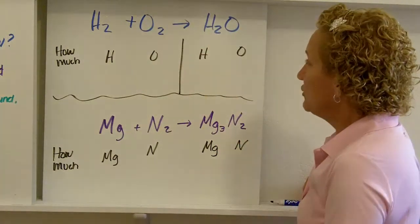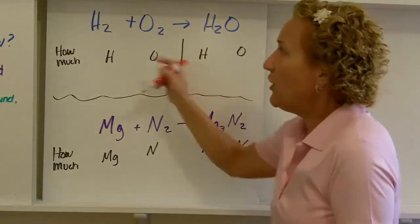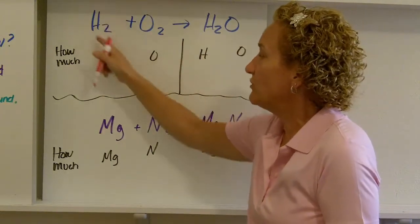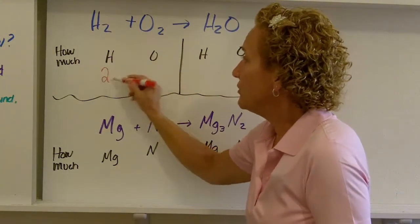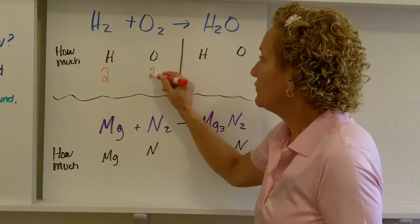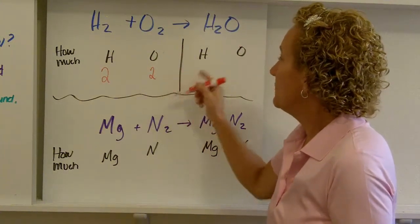So now let's do a little bit of math here. You know how to count atoms. So how much hydrogen do I have right here? I have two. And how much oxygen do I have here? I also have two atoms, two and two.